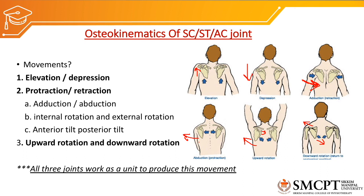Adduction and abduction of the scapula, internal and external rotation of the scapula, and anterior tilt and posterior tilt of the scapula — which occurs at the acromioclavicular joint — all occur together to produce protraction and retraction of the scapula.